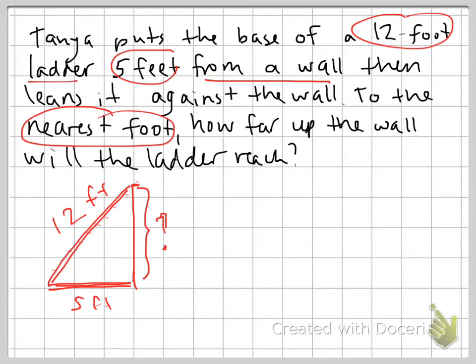Alright, so now let's make sure we label our A, B, and C. Here's our right angle. We know our C must be the hypotenuse, the longest side. That means our other sides are A and B.